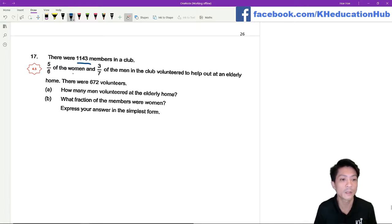There were 1,143 members at a club. 5 over 6 of the women and 3 over 7 of the men in the club volunteered to help out at an elderly home.